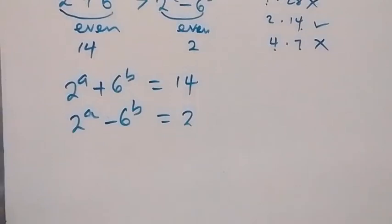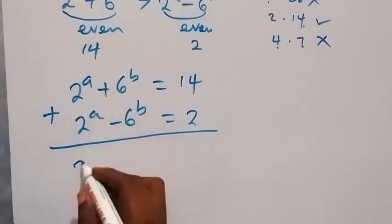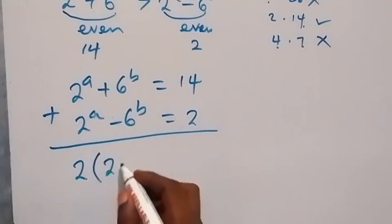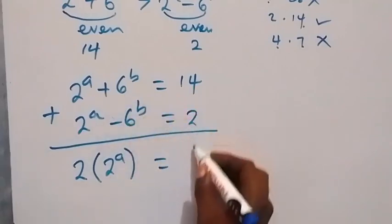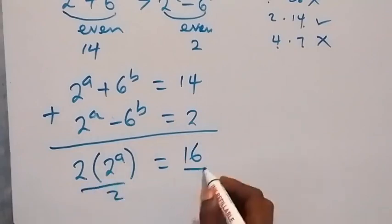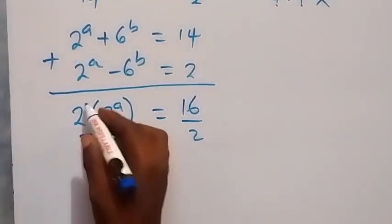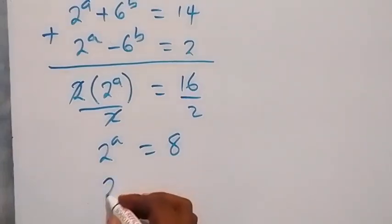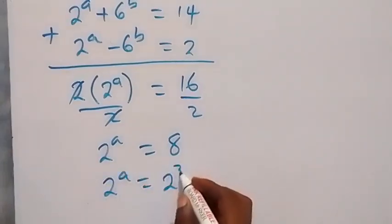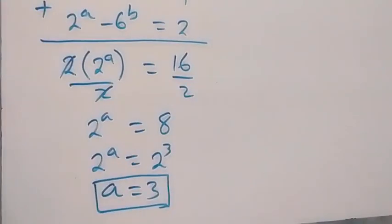We solve this simultaneously. Adding the two equations: 2 raised to the power a plus 2 raised to the power a gives 2 times 2 raised to the power a, and the 6^b terms cancel. This equals 14 plus 2, which is 16. Dividing through by 2 gives 2 raised to the power a equals 8, which we write as 2 raised to the power 3. Since the bases are equal, a equals 3.